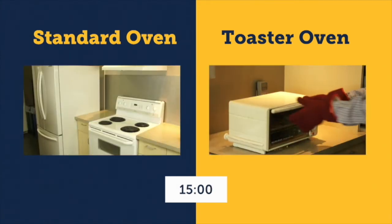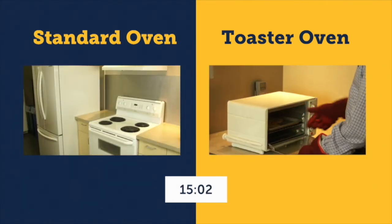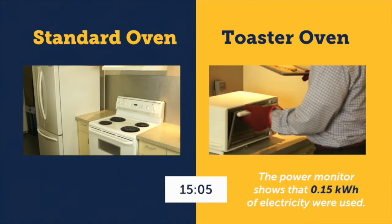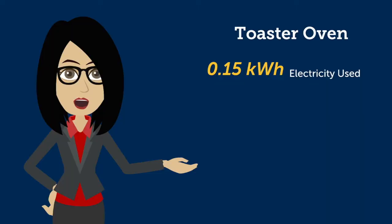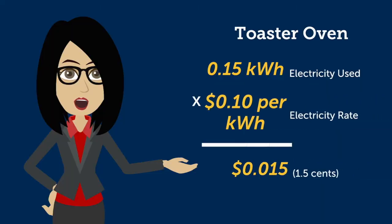The toaster oven pizzas are done and the power monitor shows that 0.15 kilowatt hours of electricity were used. Say you're paying a rate of 10 cents per kilowatt hour. That works out to 1.5 cents to cook your pizzas.